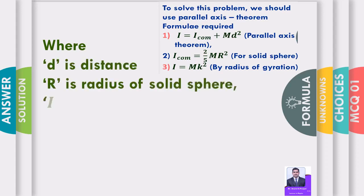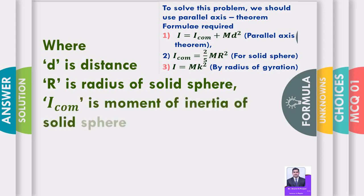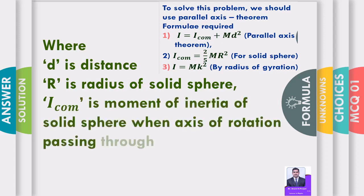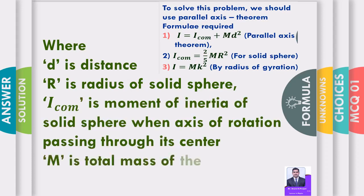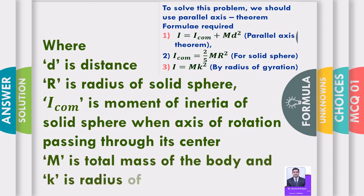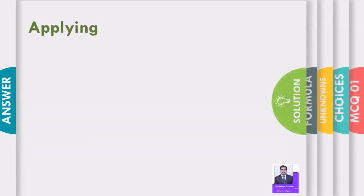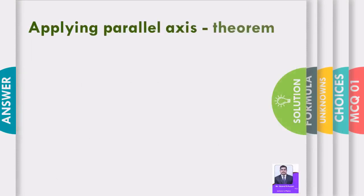Here, d is the distance, capital R is the radius of the solid sphere, I_com is the moment of inertia of the solid sphere when the axis of rotation passes through its center, capital M is the total mass of the body, and small k is the radius of gyration.